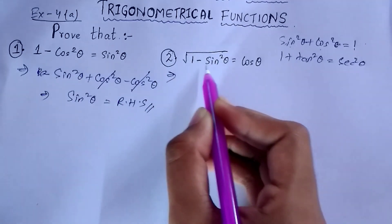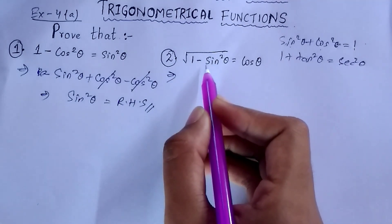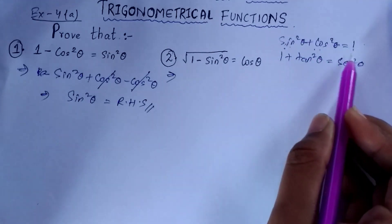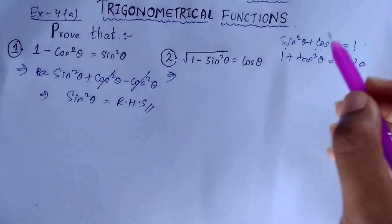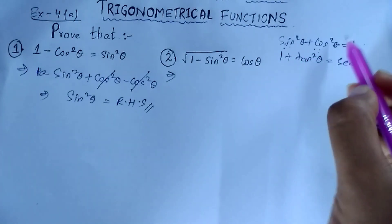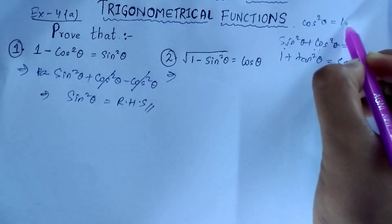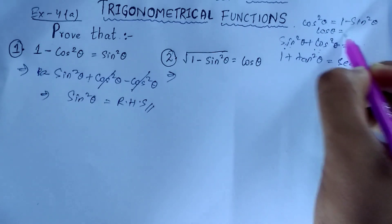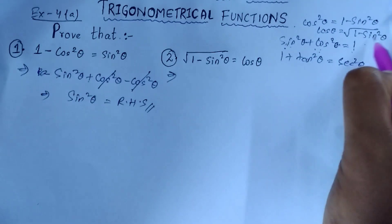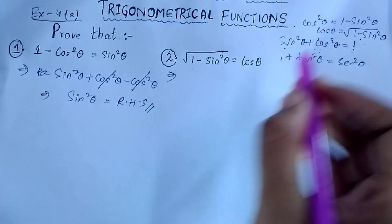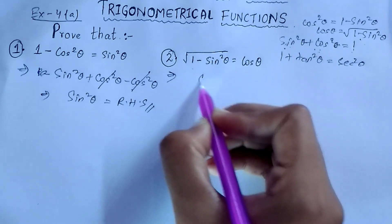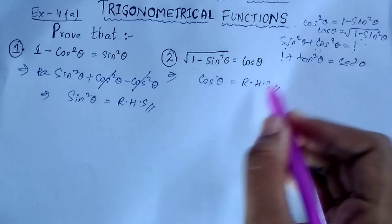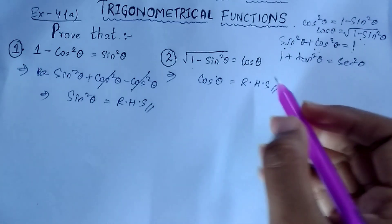Next question: prove that √(1 − sin²θ) = cosθ. We know that sin²θ + cos²θ = 1, so cos²θ can be written as 1 − sin²θ. Since there is a square, when we take the root it becomes cosθ = √(1 − sin²θ). So instead of 1 − sin²θ we can write cos²θ, and taking the root gives cosθ, which equals RHS. LHS equals RHS, hence proved.